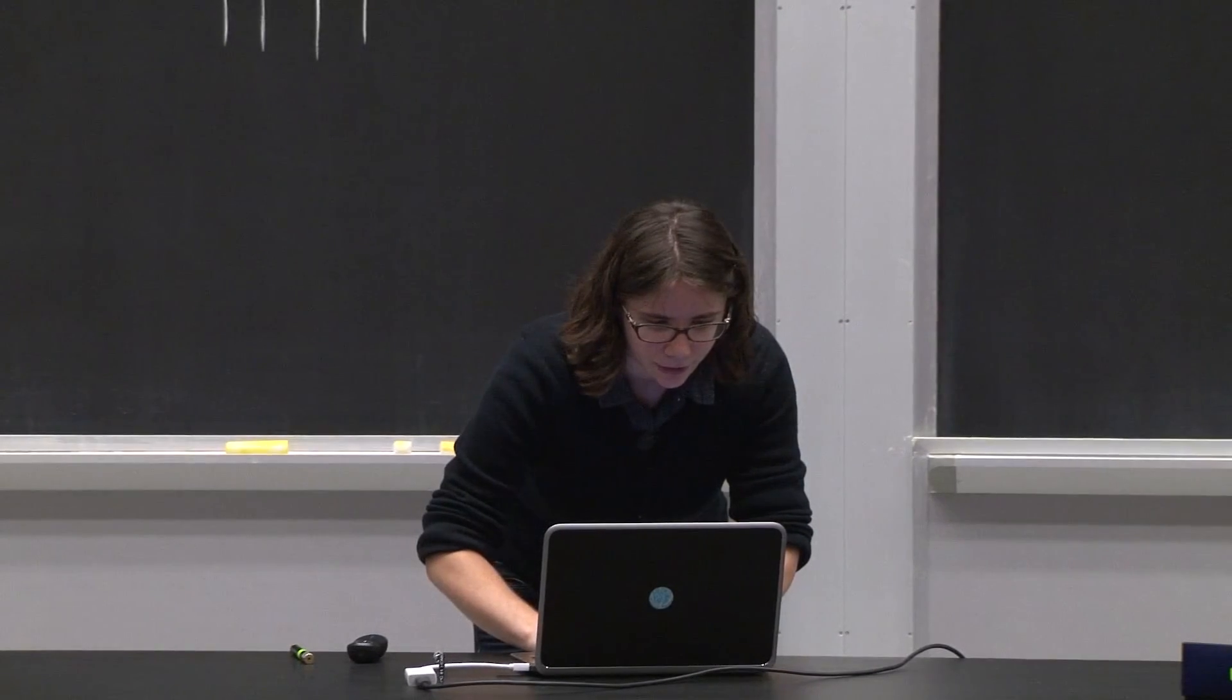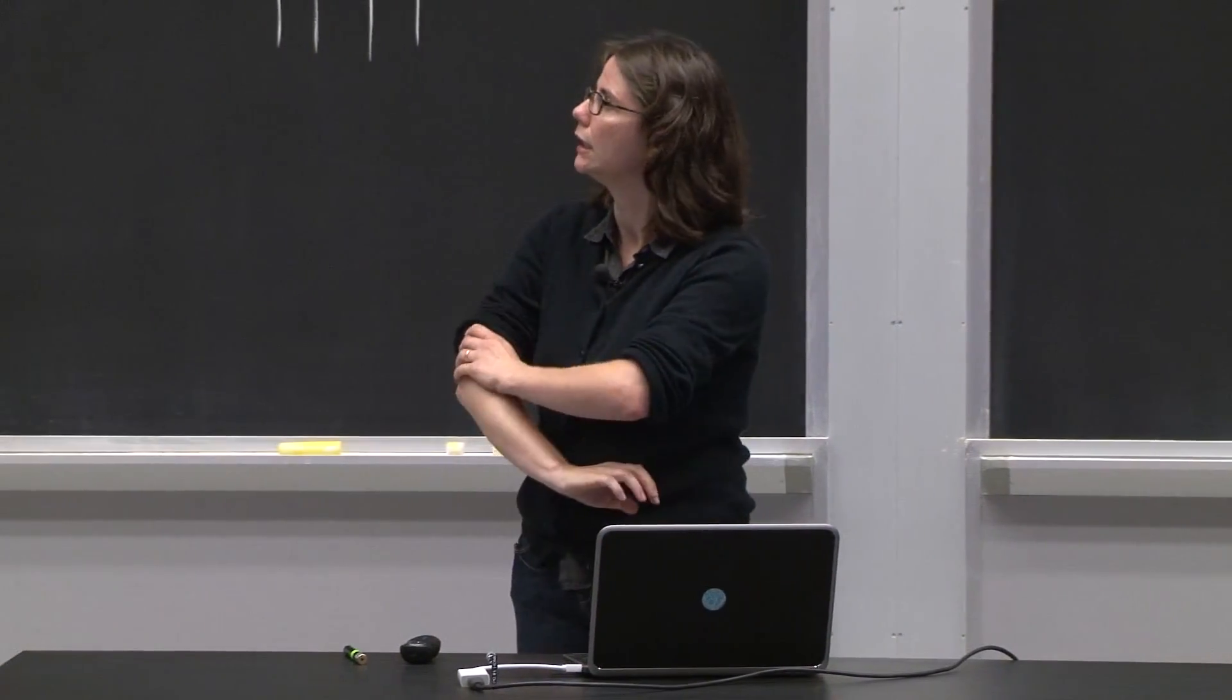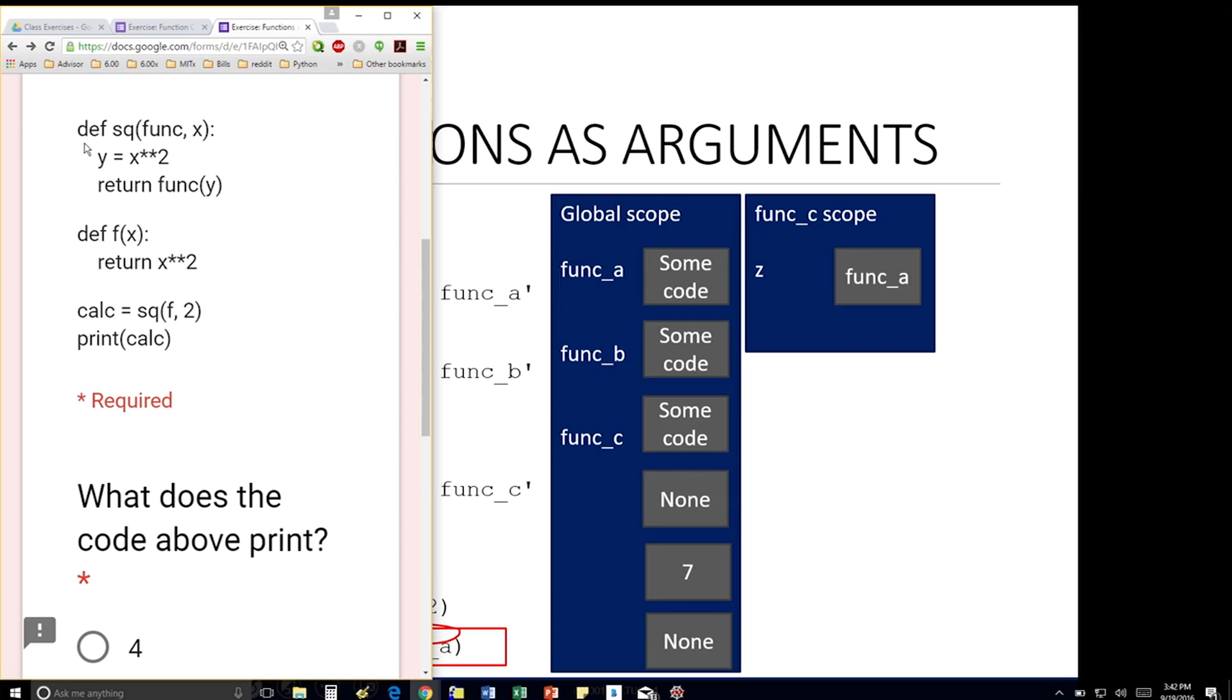So here's some code. I'm defining a function named sq, and it takes in two parameters. I'm defining a function named f, takes in one parameter, and then I'm doing these two lines. The first one is just calling function sq, and the next one is just printing the value.